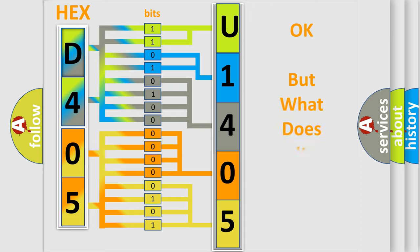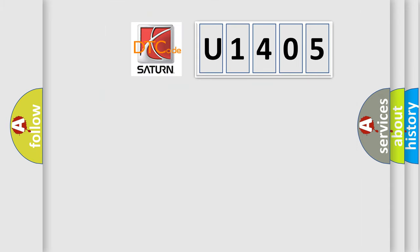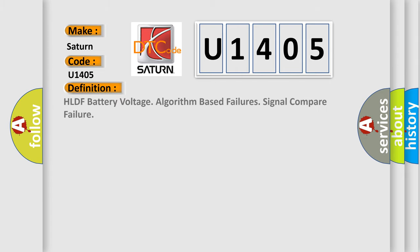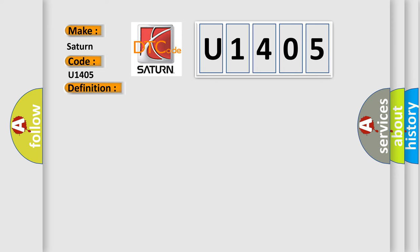The number itself does not make sense to us if we cannot assign information about what it actually expresses. So, what does the diagnostic trouble code U1405 interpret specifically for Saturn car manufacturers? The basic definition is: HLDF battery voltage algorithm based failures — signal compare failure. Here is a short description of this DTC code.